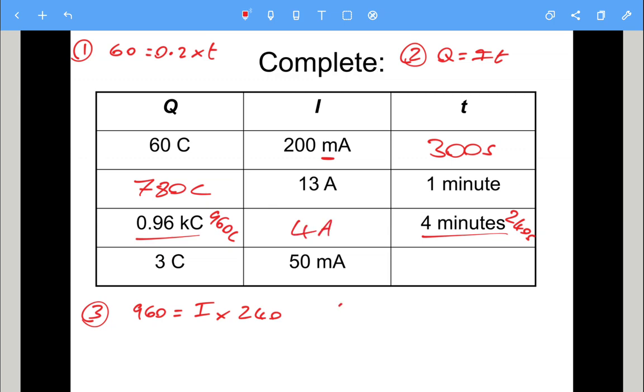And the last one to find time. So it's Q equals IT. We've got milliamps again. Remember that's just divided by 1000. So Q equals IT will be 3 equals. We've got 50 divided by 1000. Which is 0.05 amps. Times the time. So to get time on its own. We need to get rid of the time 0.05. And we need to do 3 divided by 0.05. And that gives an answer of 60 seconds.